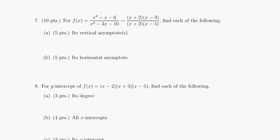Okay, let's look at exam 1a problem number 7. We have this rational function given and we want to find vertical asymptotes and horizontal asymptote.